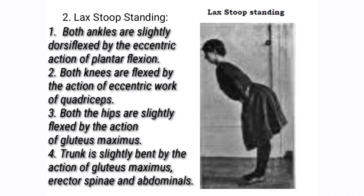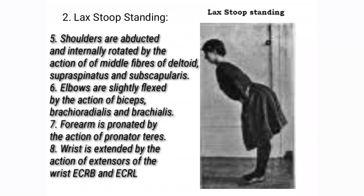The next position is lex stoop standing. Here, both ankles are slightly dorsiflexed by the action of plantar flexors. Both knees are flexed by the eccentric work of quadriceps. Both hips are slightly flexed by the action of gluteus maximus. The trunk is slightly bent by the action of gluteus maximus, erector spinae, extensors of spine and abdominals. The shoulders are abducted and internally rotated by the middle fibers of deltoid, supraspinatus and subscapularis.